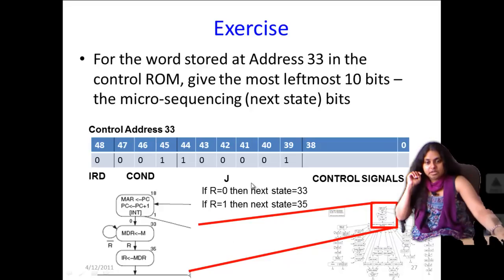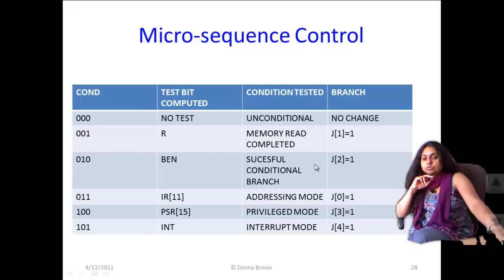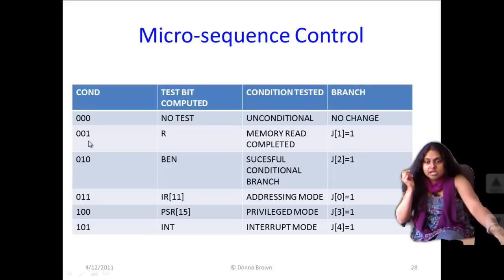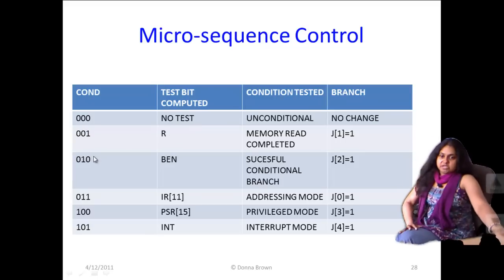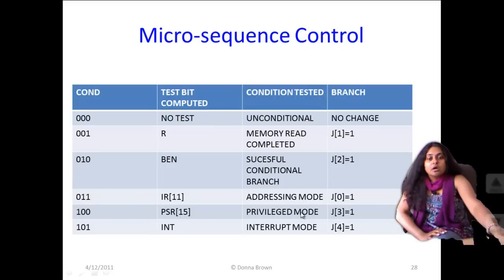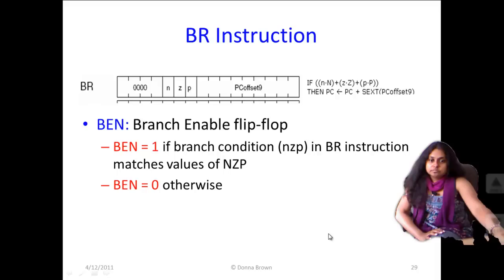This table shows what happens for each case where the con bits go from 000 to 101 — this is the same as what you saw in the circuit. 000 is unconditional, nothing happens. 001 means you are waiting for a memory read. 010 means you are waiting to see if the conditional branch has been taken. 011 means you are waiting to check the addressing mode — whether it's direct or immediate. 100 is to check if you are in a privileged mode, and 101 is to check if you have an interrupt.